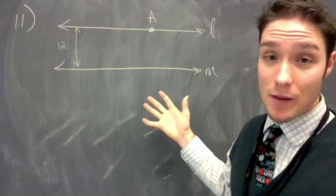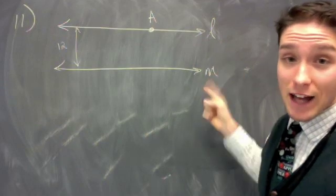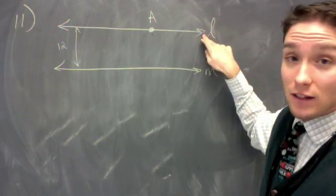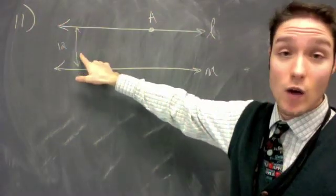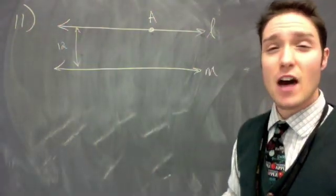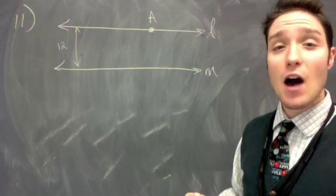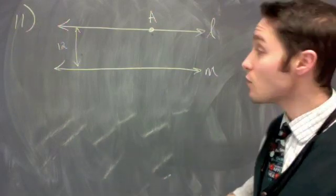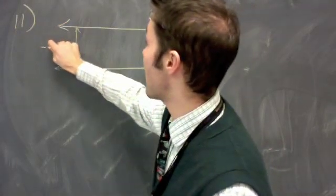Okay, so I've set up a diagram here with the two parallel lines L and M. And it says point A is on line L. I've also represented that they are 12 units apart. Now the question is asking how many points are equidistant from line L and M? So that would be the locus of points equidistant from L and M.